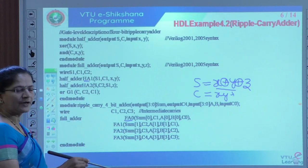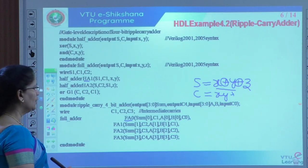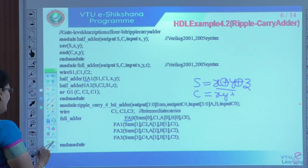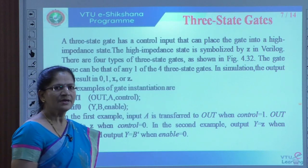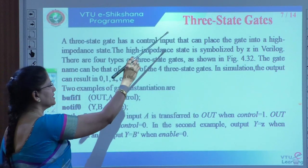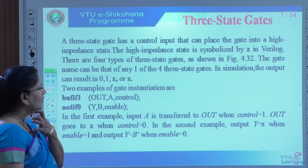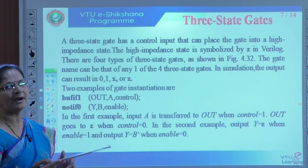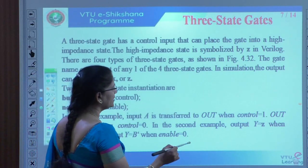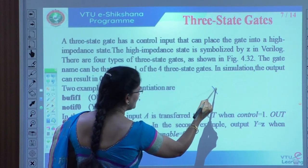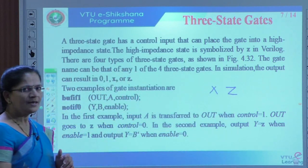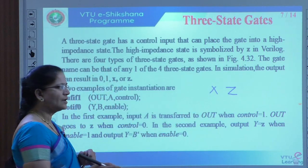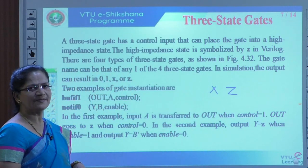Now I think all of you understand how to use the full adder with vector representation. Next, we will go with tri-state gates. We know only two logic values are given — either 0 or 1. But you can also give two more values: one is called X (unknown — either 0 or 1) and another is called Z (high impedance).